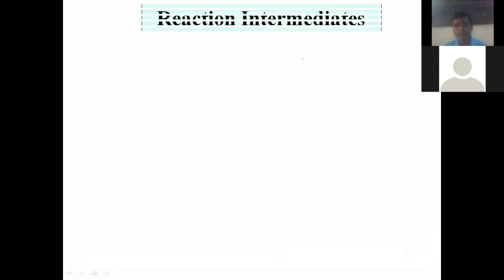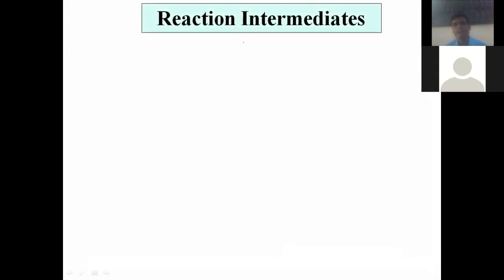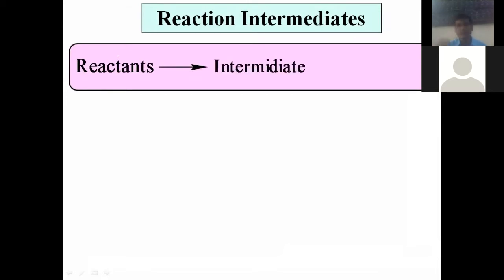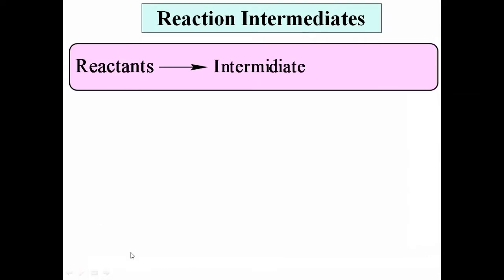Now, a very important concept related to reaction mechanism is reaction intermediates. In a chemical reaction, reactants are first converted into some intermediate. During each and every chemical reaction, reactants first convert into an intermediate, and then that intermediate further converts into the corresponding product. This is the general trend of each and every organic reaction. Those intermediates which are formed during organic reactions are called reaction intermediates.